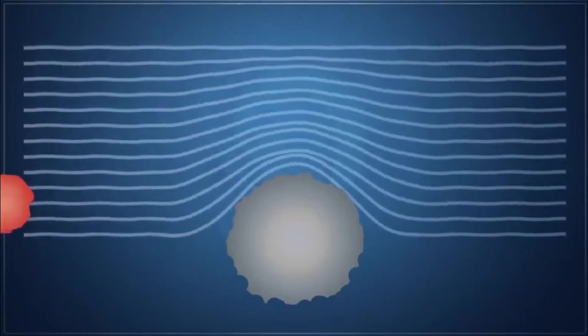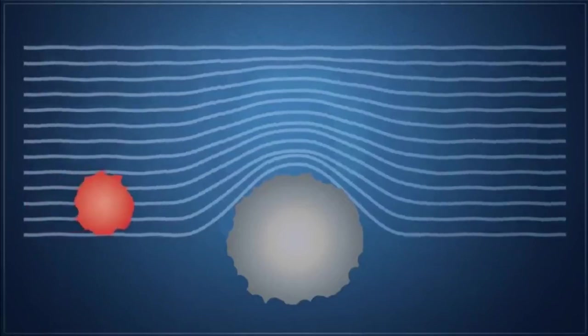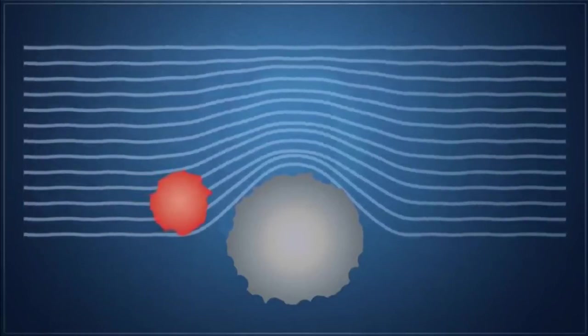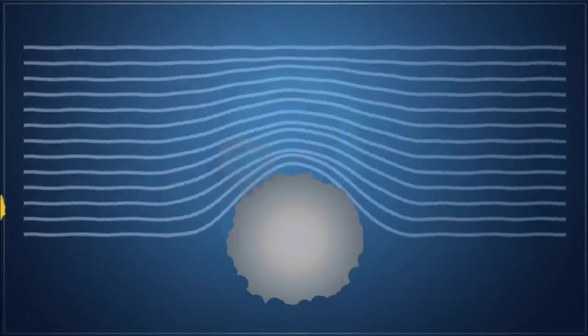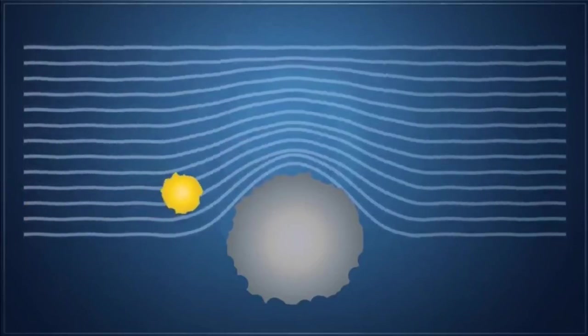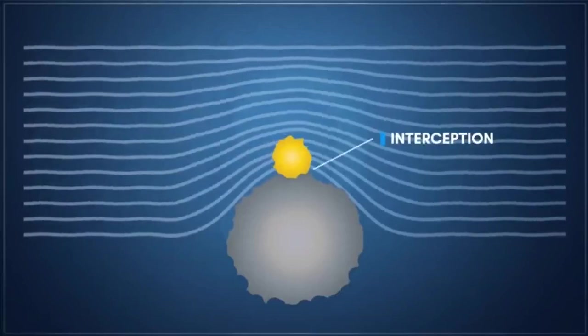Inertial impaction occurs on larger particles in this size range. When a particle cannot follow the air stream around the fiber because of its inertia, it impacts the fiber where it's captured. In the interception mechanism, smaller particles stay within the air stream, but due to their size are naturally brought close enough to come in contact with the fiber.